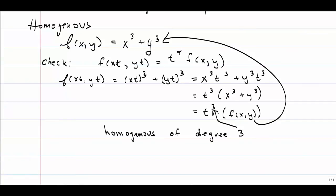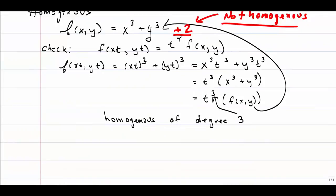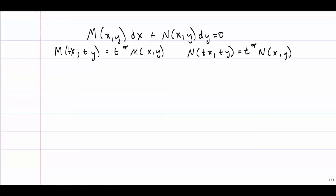So this is actually homogeneous of degree 3, and the 3 comes from the exponent of the t. Notice if I added a plus 2 to this, that would not be homogeneous — you could go ahead and do the algebra to prove that to yourself. In general the test to see if something is homogeneous gets a little tedious, and oftentimes you're not asked to test it. If I can put something in this form where both M and N are homogeneous with the exact same degree, then I'm going to be able to use a particular type of substitution.